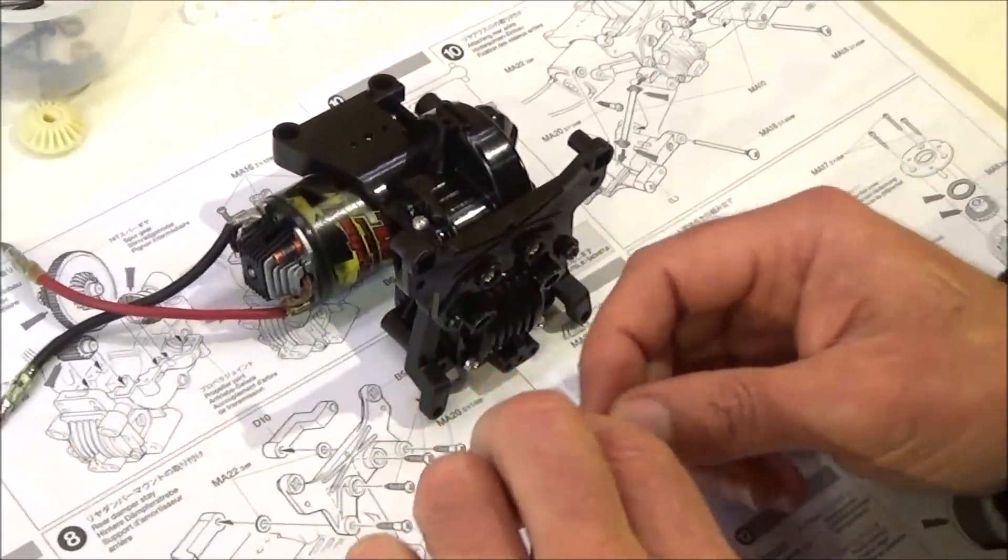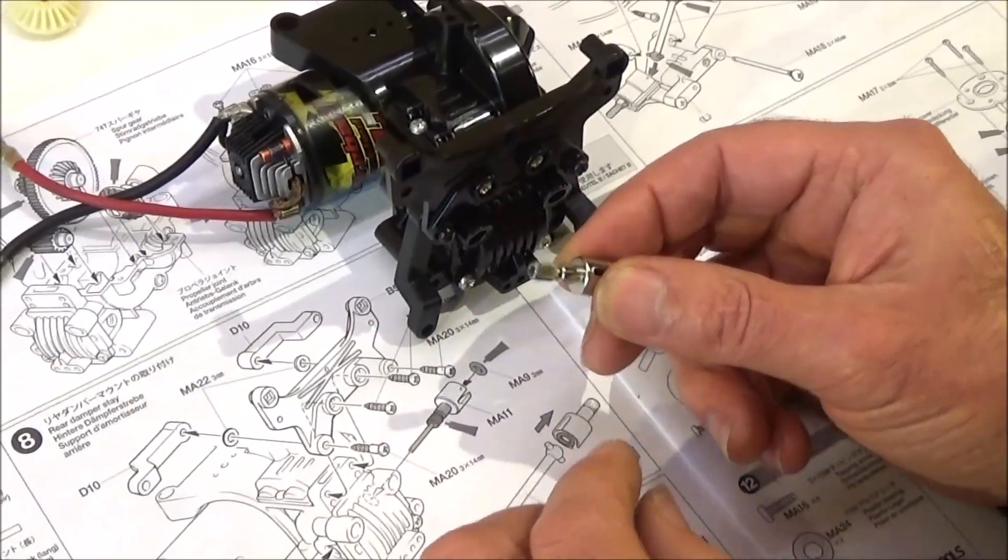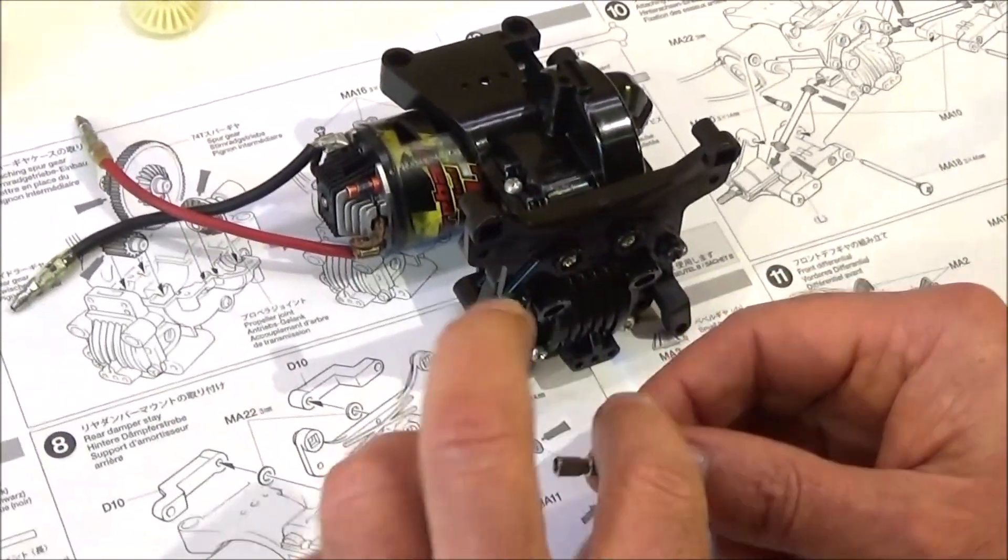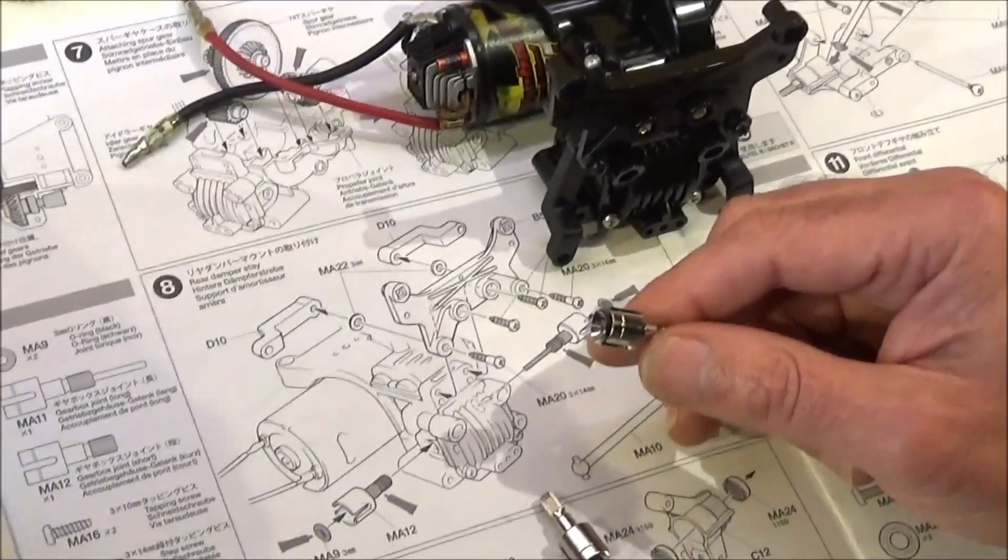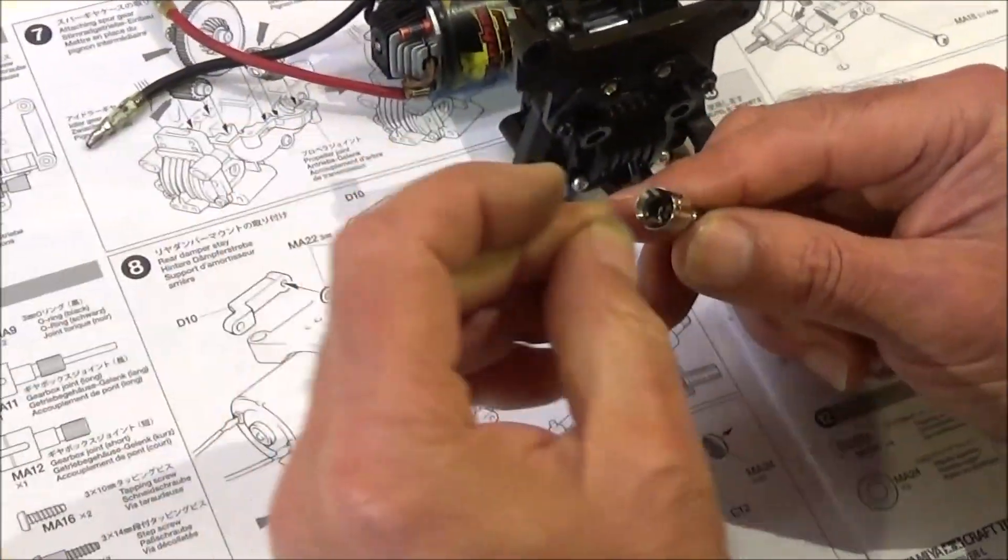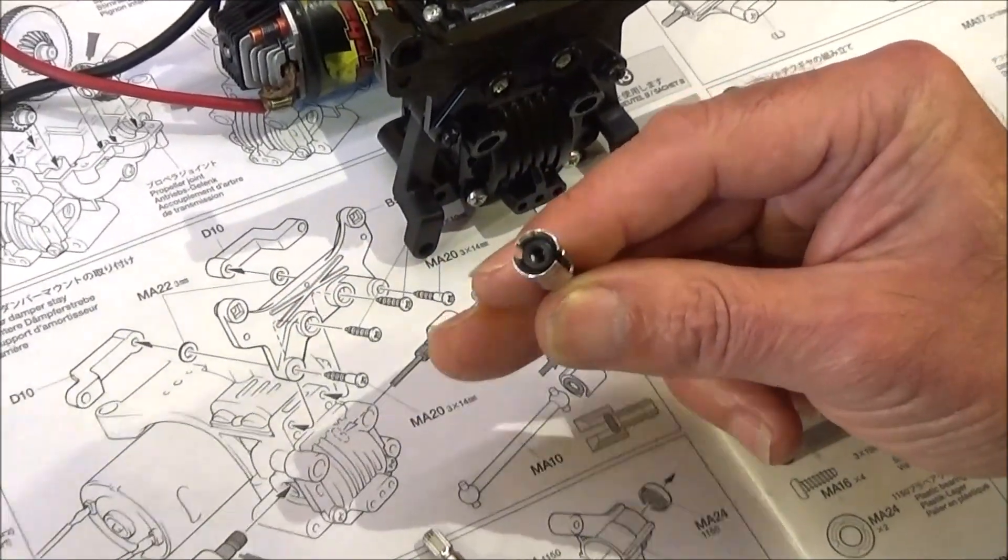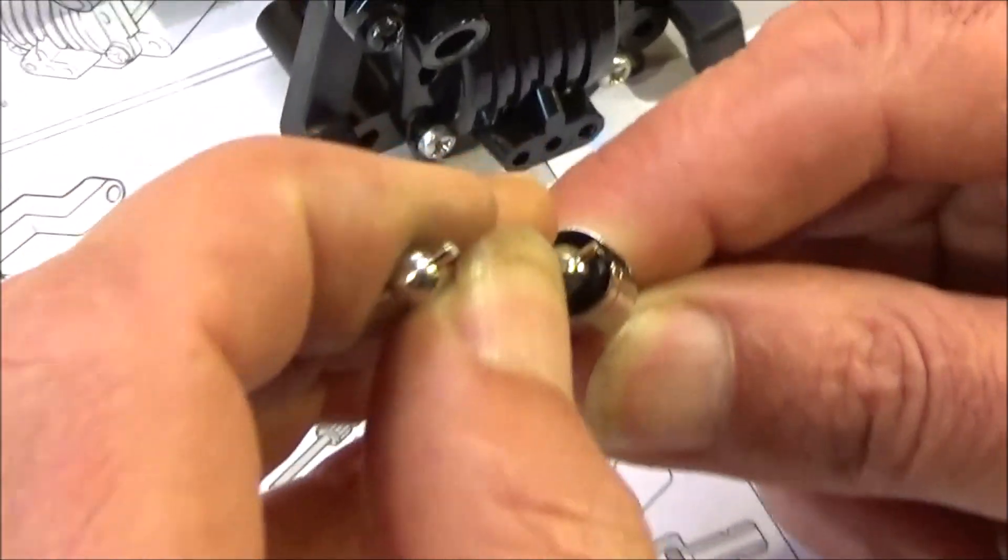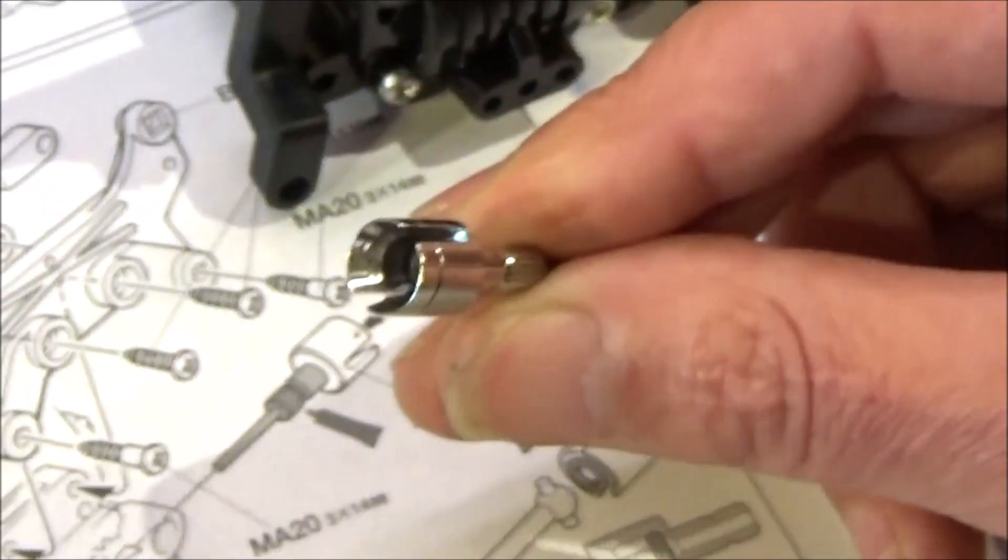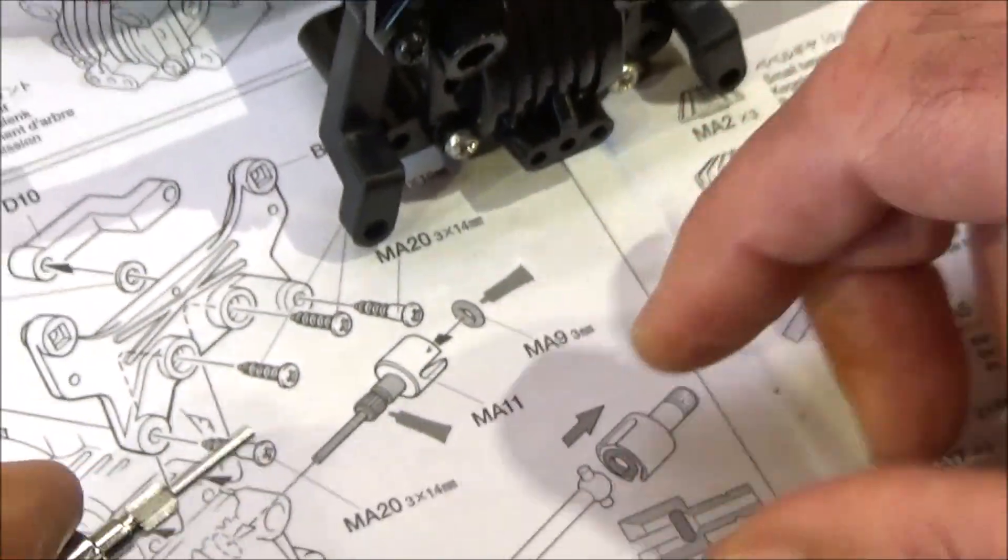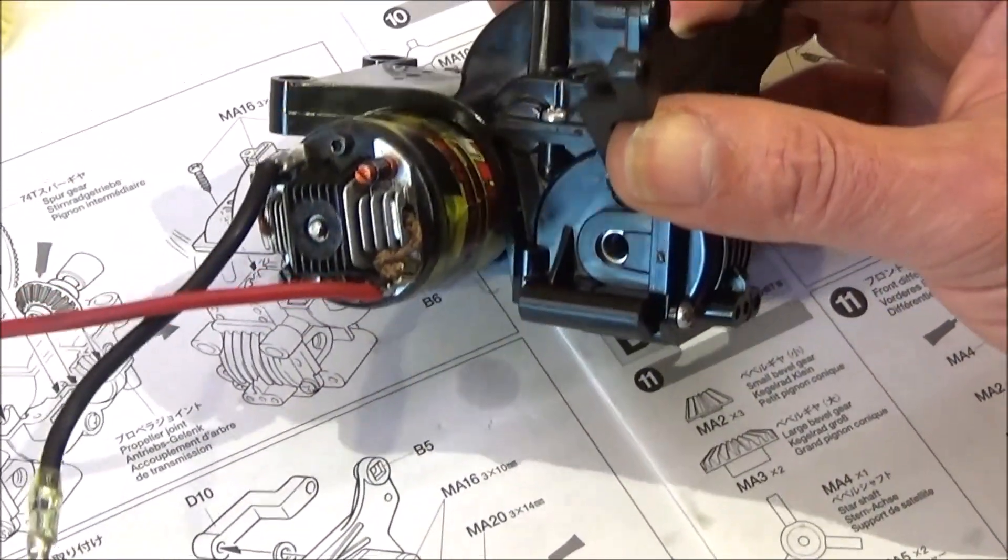And then we're going to fit the output shafts. They call them gearbox joints, but I call it an output shaft. Just remember to get your little O-ring. Little black O-ring. Fit it in there first. Dog burn and just push it in. It should stay in place because it's quite a tight fit. So one in each. And then we're just going to grease those up. Slip them into a differential.